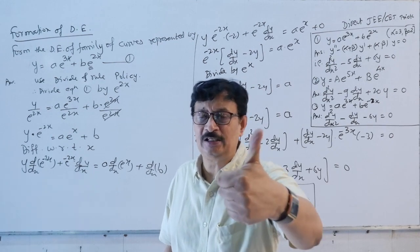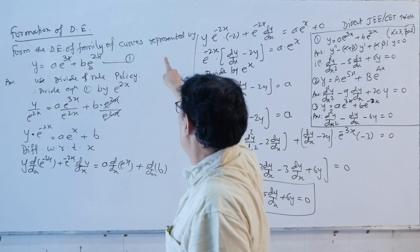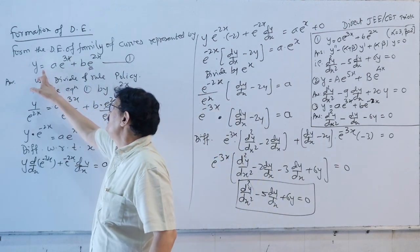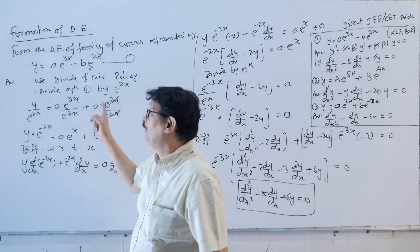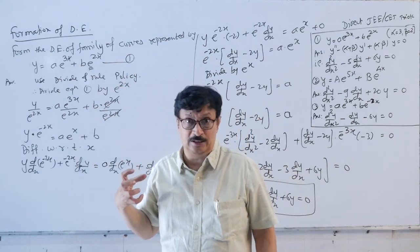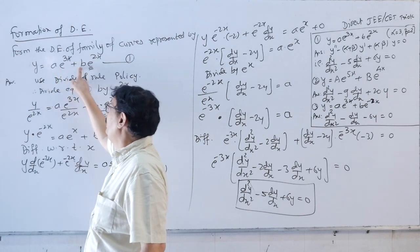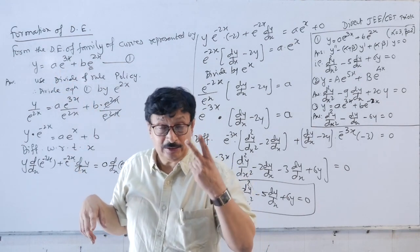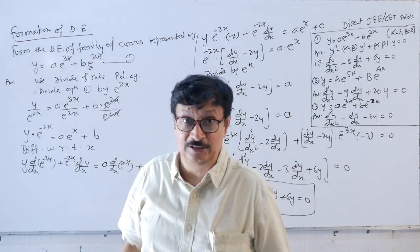Very interesting and important example: form the differential equation of the family of curves represented by y = ae^(3x) + be^(−2x). This is equation 1. How many arbitrary constants are there? Two — a and b — so we differentiate twice. But for these types of examples, we use the 'divide and rule policy'.